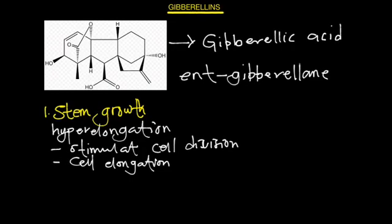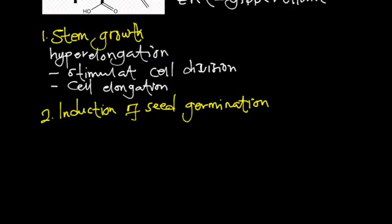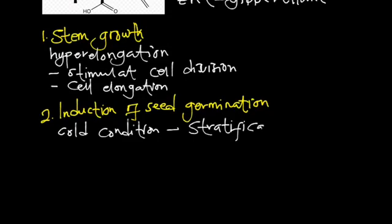Another function of gibberellic acid is the induction of seed germination. Research has also shown that it can cause seeds to germinate, seeds that require a very good temperature or cold to induce germination causing stratification. That is cold condition stratification, and also in light-induced germination.